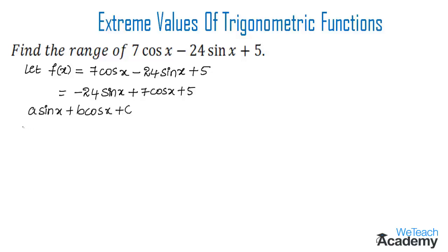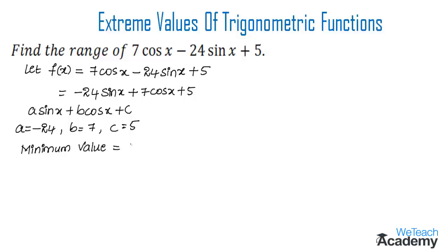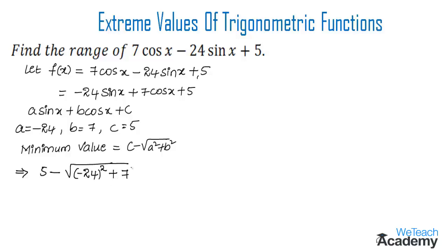By comparing, we get a = -24, b = 7, and c = 5. The minimum value of the function is given by the formula c - √(a² + b²). Substituting: 5 - √((-24)² + 7²).